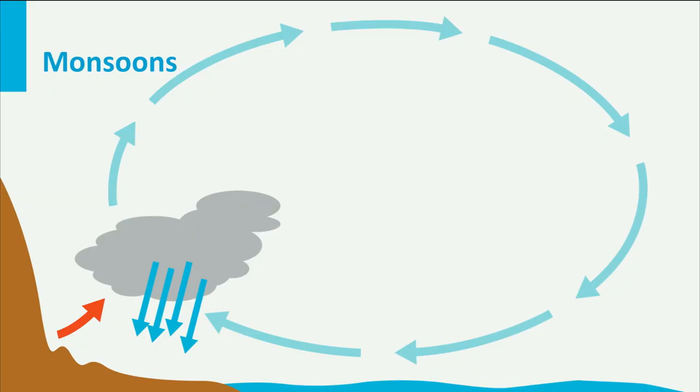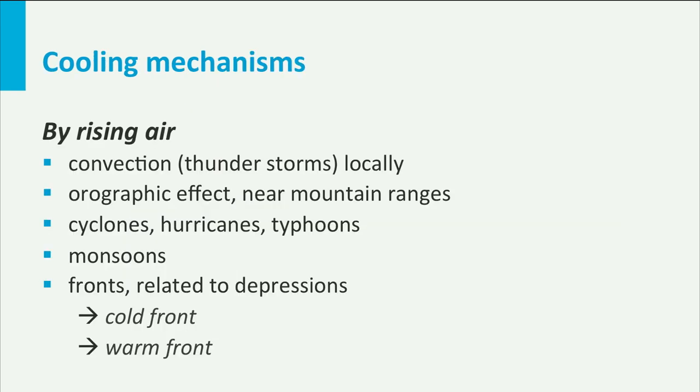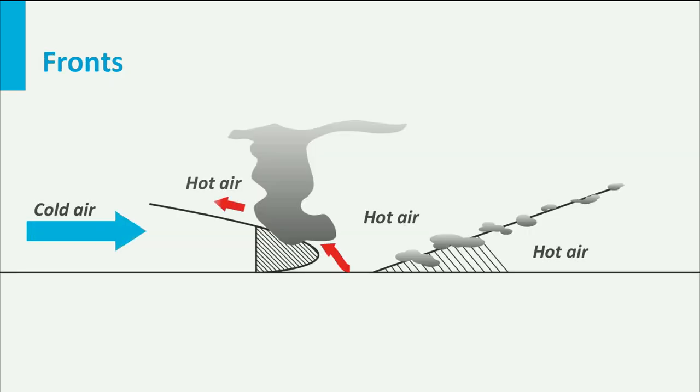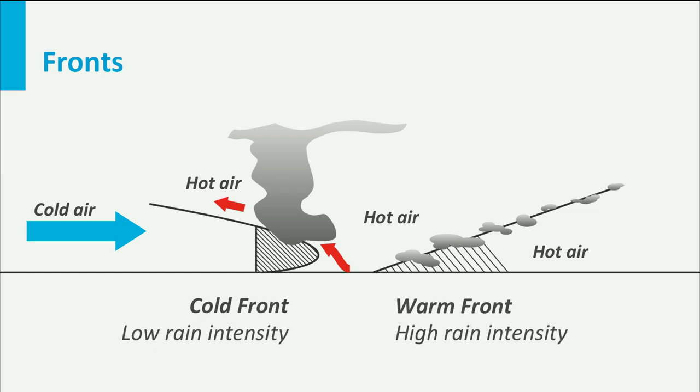And then there are the monsoons, governed by the difference in cooling between land and ocean in the tropics, causing sea breezes that carry moist air inland. In temperate areas, there are depressions that cause cold and warm fronts to rotate over land. Because cold air is heavier than warm air, a cold front forces itself under the warm air and causes an uplift, which can trigger heavy thunderstorms.